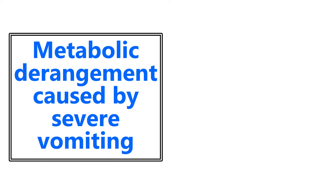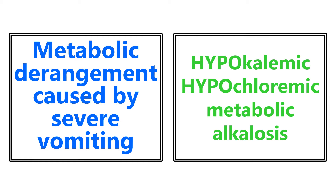The metabolic derangement caused by severe vomiting is going to be a hypokalemic, hypochloremic metabolic alkalosis. Remember, when there's severe vomiting, you're vomiting up the gastric contents, which is a lot of hydrochloric acid. So you're going to be losing chloride — hypochloremic — and you're going to be losing acid, which is where you get the metabolic alkalosis.